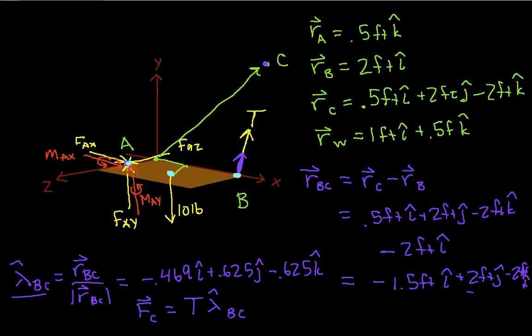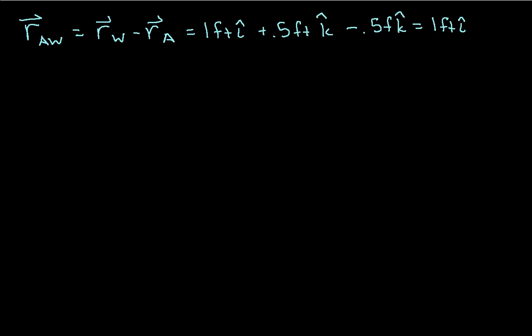So let's get R_AB. Again, this will be R_B minus R_A. R_B is 2 feet in the i direction, and R_A, again, if I subtract it, I take minus 0.5 feet in the k hat direction.